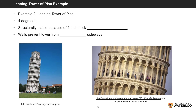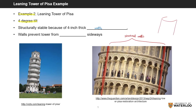The second example we will consider is the Leaning Tower of Pisa. Consider for yourself why the structure is stable despite having a 4-degree tilt. The answer is because it has very large inner walls, 4 inches thick. These walls wrap around the entire cylindrical shape, like the 3D cross-section shown here, and prevent the tower from shearing or collapsing sideways.